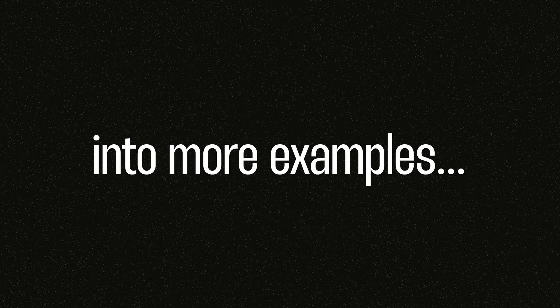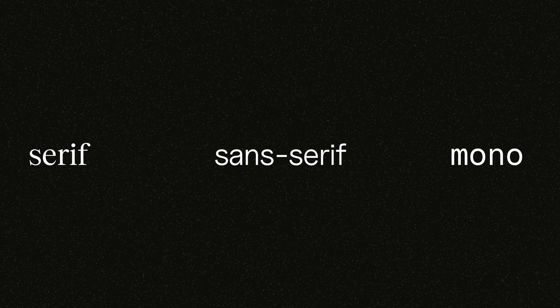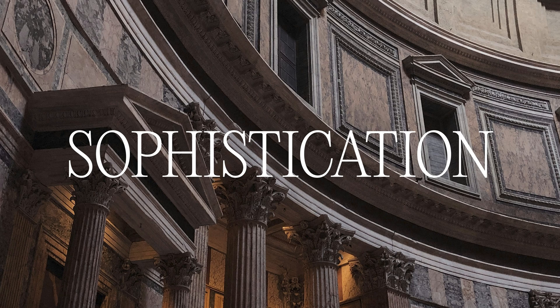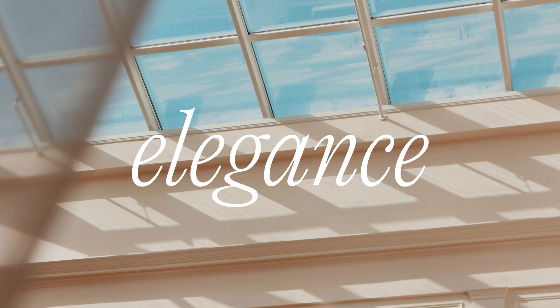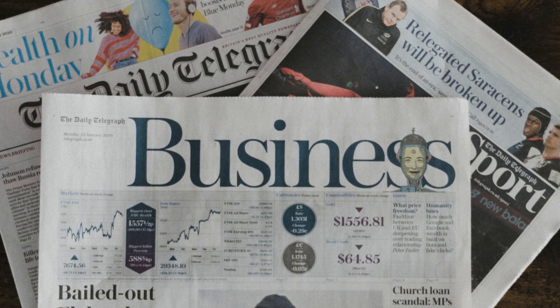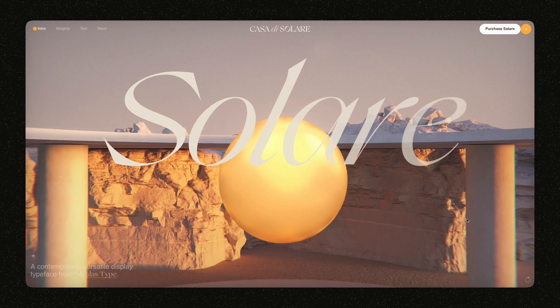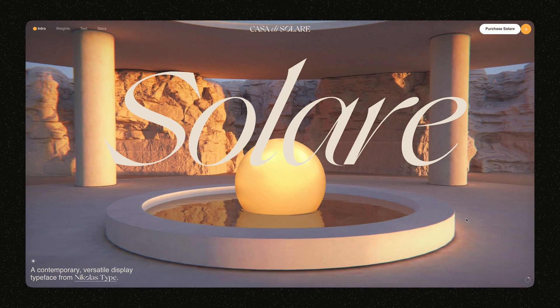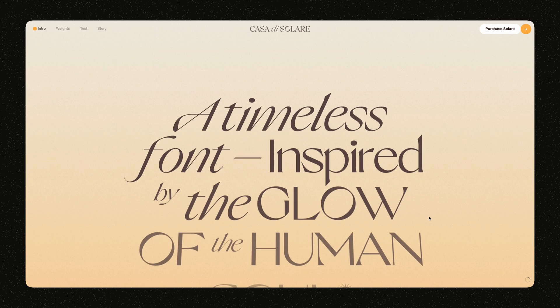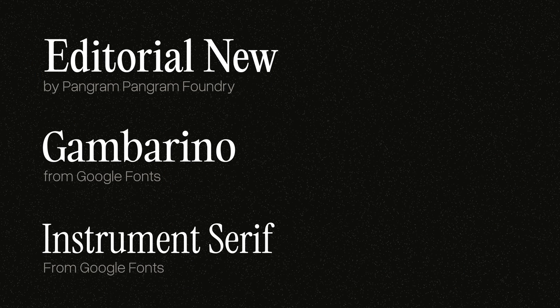Before we go deeper into more examples, there are three essential font families you have to know. First off is serif fonts. They are known for their visual features that have feet or tails. Serif fonts are an excellent choice to evoke a sense of sophistication and elegance, or something more traditional like you see in newspapers. In award websites, they are often used as headings and titles, which can make the website look so much more elegant and clean. Here are some of my go-to serif typefaces — some are free but some are not.